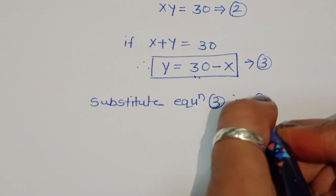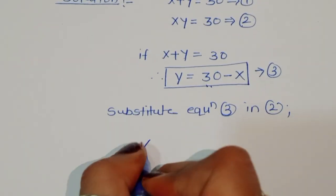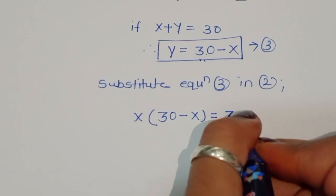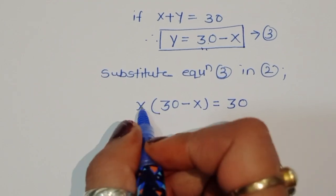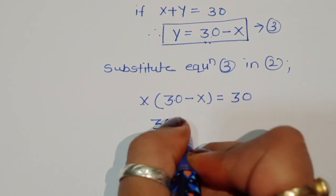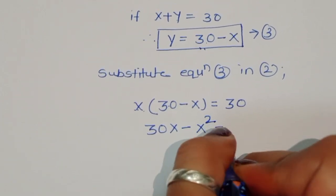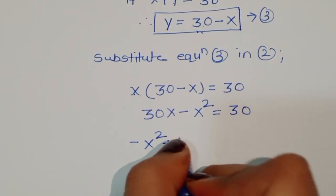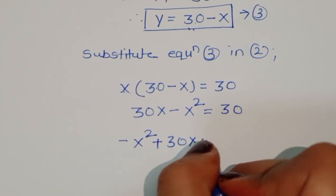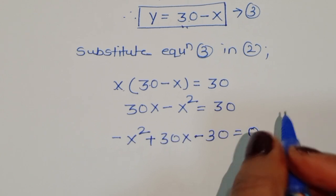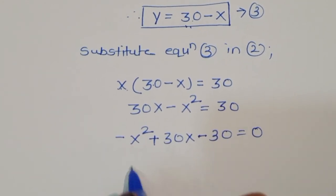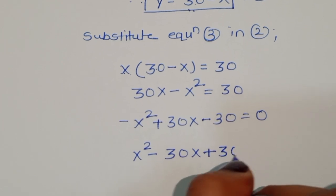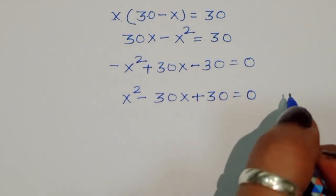Substituting equation 3 into equation 2, we get x times (30 minus x) equals 30. Expanding, this becomes 30x minus x squared equals 30. Rearranging: minus x squared plus 30x minus 30 equals 0. Multiplying through by minus 1 gives x squared minus 30x plus 30 equals 0.